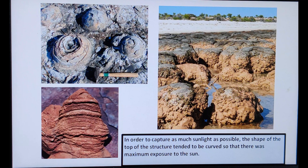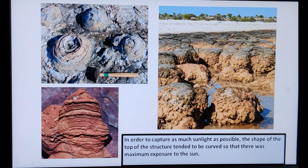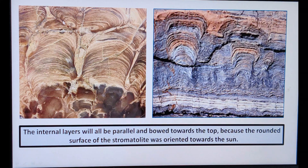In all the pictures we have seen in this presentation, the stromatolites are dome-shaped. In order to capture as much sunlight as possible, the shape of the top of the structure tended to be curved, so there was maximum exposure to the sun. If we take a cross-section of the stromatolites, we will find internal layers which are parallel and bow towards the top, because the round surface of the stromatolites was oriented towards the sun.